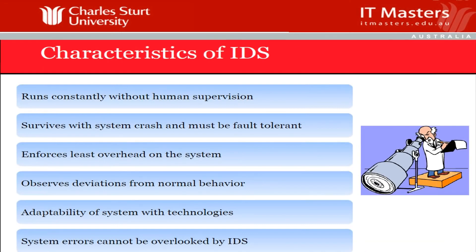An IDS usually runs constantly without human supervision — otherwise you'd just hire the security guard from the beginning. They always look around. Think about nightclubs: security guards always walk around and look at people. That's exactly what an IDS does — it won't walk around, but it will look into the packets.